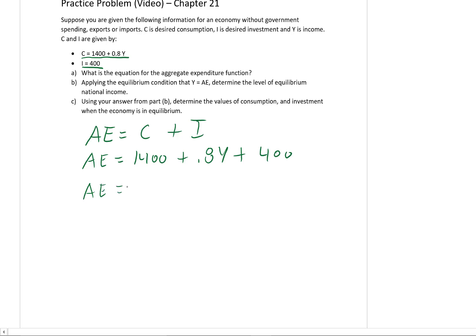AE equals, now we can add 1400 and 400 to get 1800 plus 0.8Y. And so think of this as the capital A that we saw in the video or in the text. And 0.8 is just the marginal propensity to consume, which is equal to the marginal propensity to spend in this case.